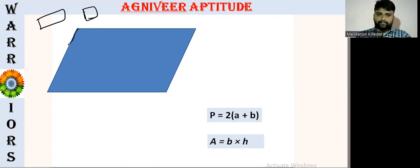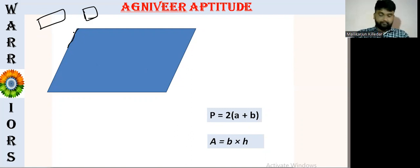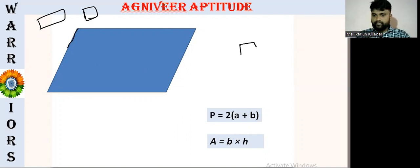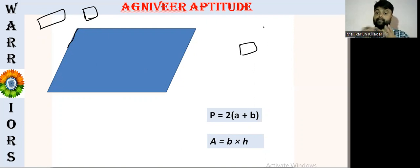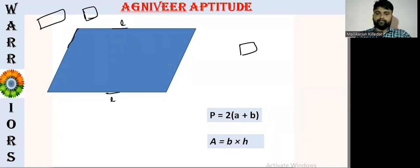This is just a tilt. For example, this is a square. This is a square. So this is a tilt angle. So this is a parallelogram.